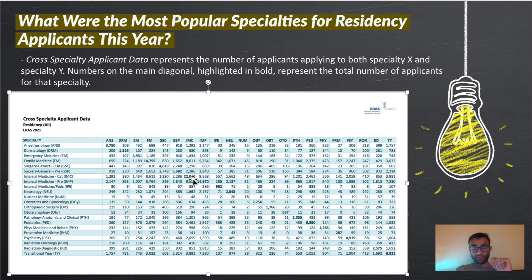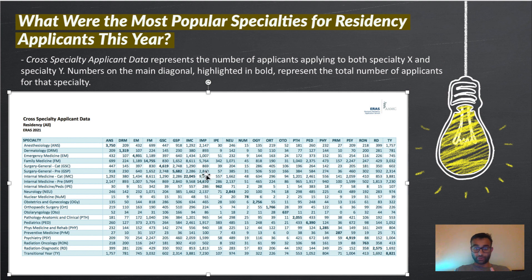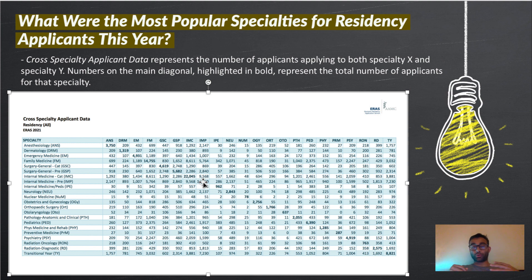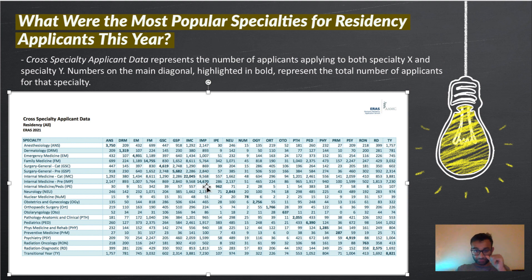The number of individuals applying to internal medicine categorical programs is 22,045, and family medicine is 14,755. So the top two specialties purely by number are internal medicine categorical followed by family medicine. There's also an internal medicine prelim year — that's usually a year for individuals who won't end up specializing in internal medicine but want one year of medical training before starting other specialties, such as dermatology or ophthalmology. There are 14,670 people doing internal medicine as a prelim year.